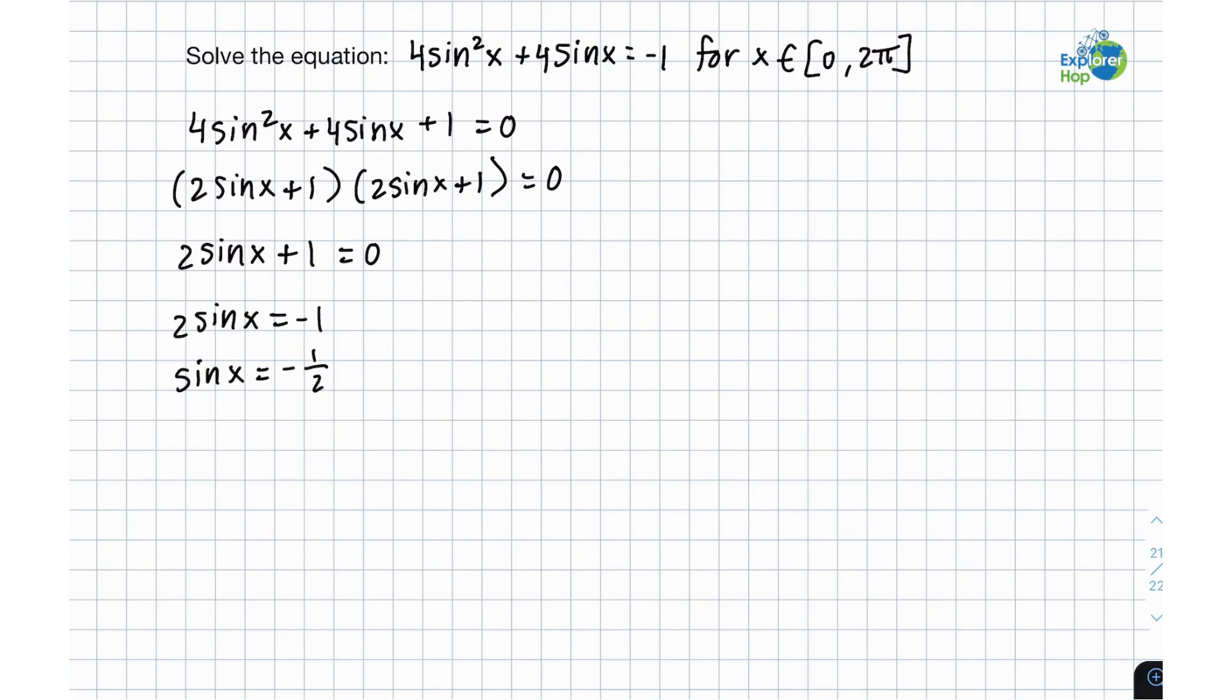And this is actually a special angle. So we know that x is equal to pi over 6. However, since this is negative 1 over 2, we can use the CAST rule to figure out which quadrant it is in.